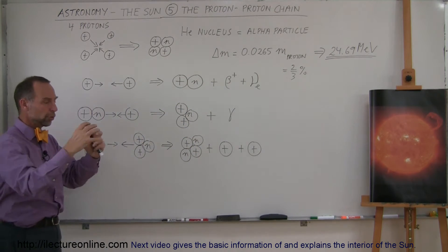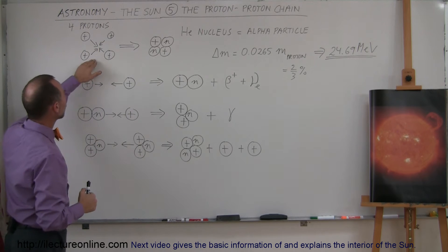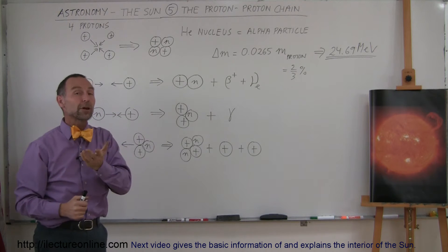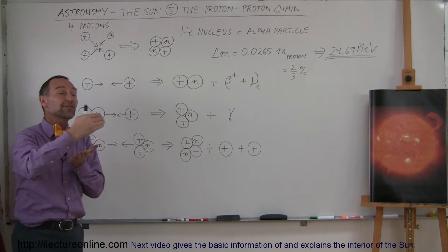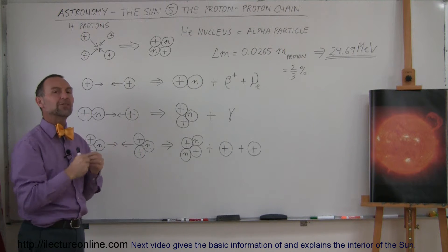So you may wonder, how can four protons turn into something that are now two neutrons and two protons? Where did the neutrons come from? Well, actually the process is not this simple. It actually goes through a series of steps called the proton-proton chain. It's actually a series of three steps.